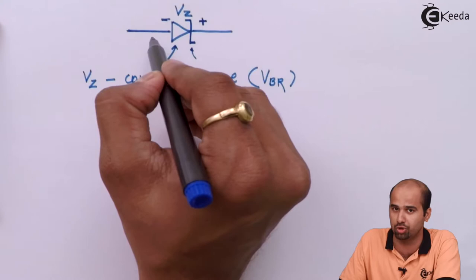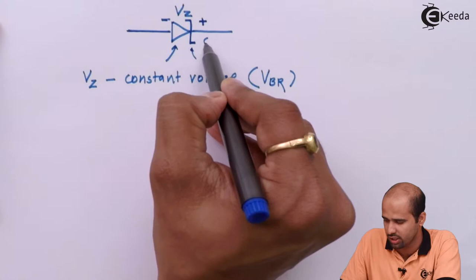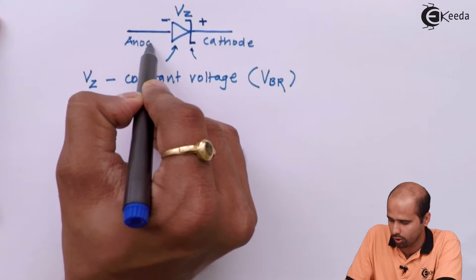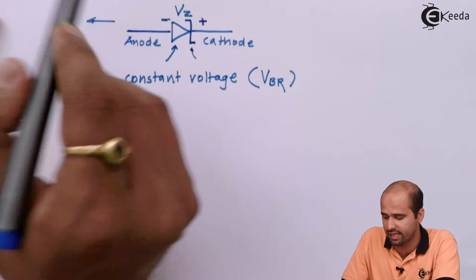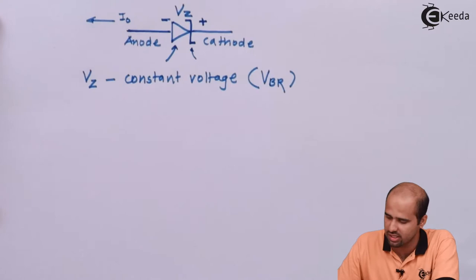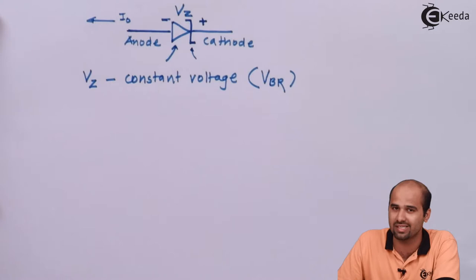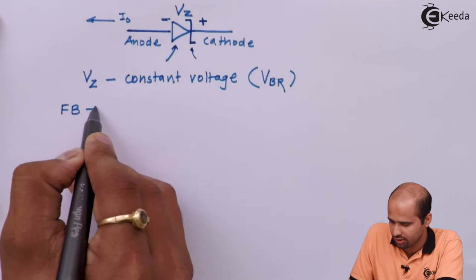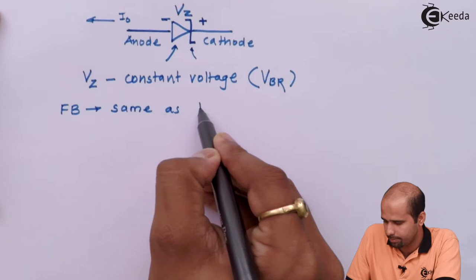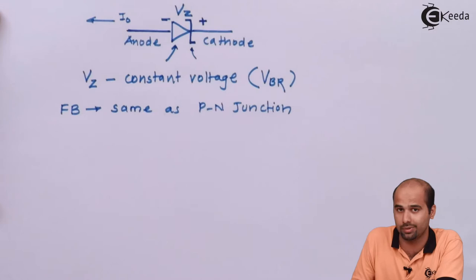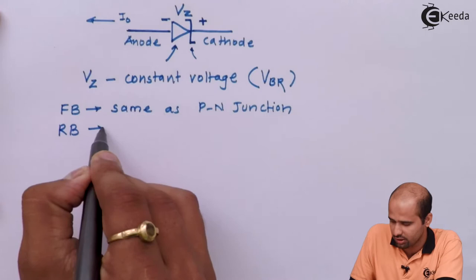Even though operated in reverse bias condition, no harmful effects occur. The plus-minus is with respect to anode, not cathode, so cathode-to-anode potential is Vz. Current flows from cathode to anode, which is the reverse saturation current. A question arises: can we use this Zener diode in forward bias condition? The answer is yes — under forward bias condition this Zener diode behaves the same as a normal p-n junction diode. Under reverse bias, the voltage Vz becomes constant.